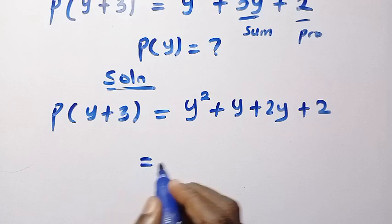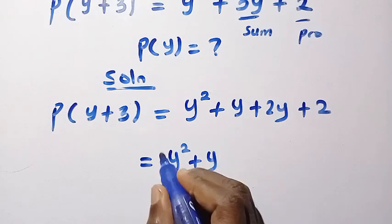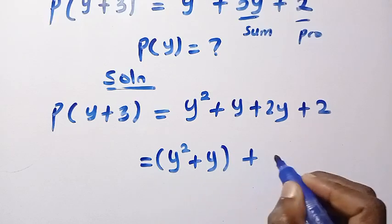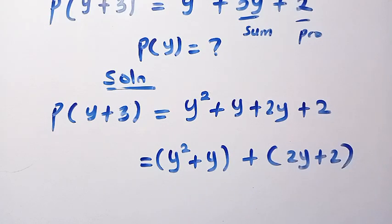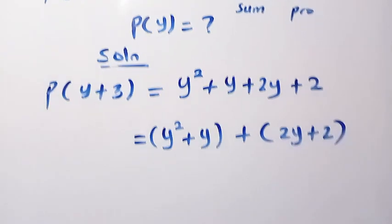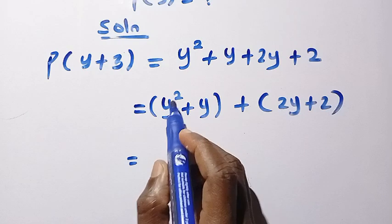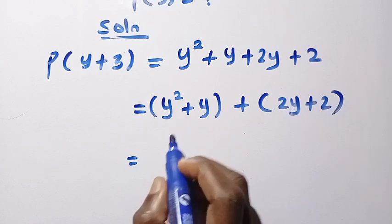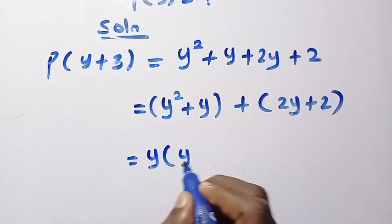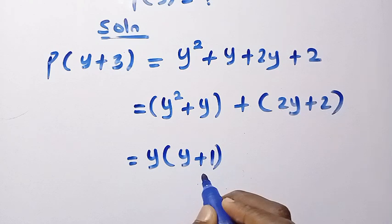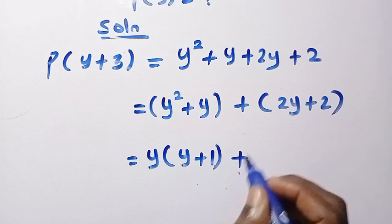Then we have to group this together as we have y squared plus y plus also 2y plus 2. Then after having this, what is common here is y. Because y squared is y times y. Let's take out y from here. By taking out y, we have this as y plus 1. So y times y, that is y squared. y times 1, that is y plus,